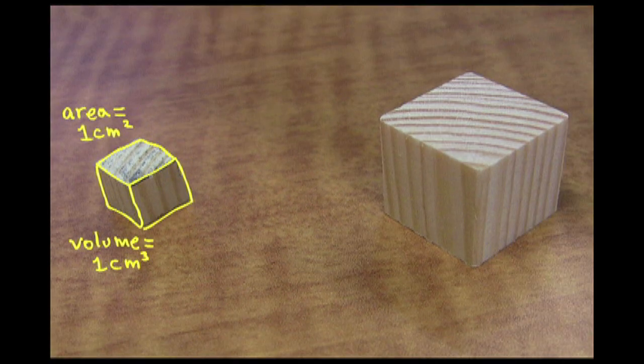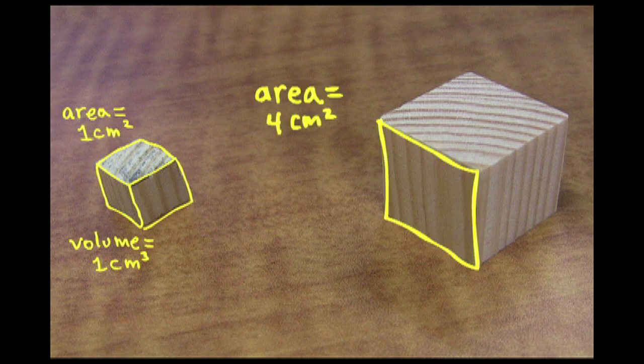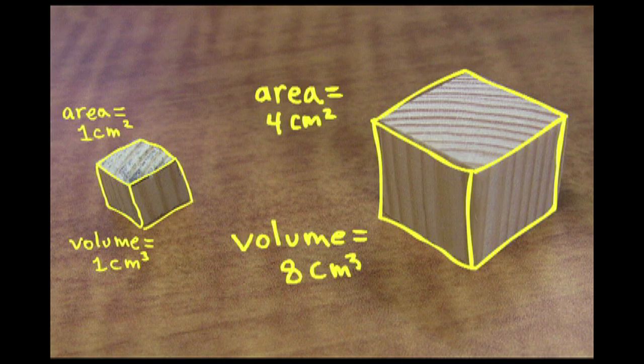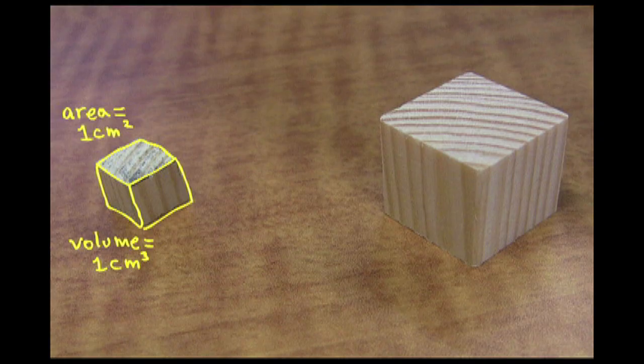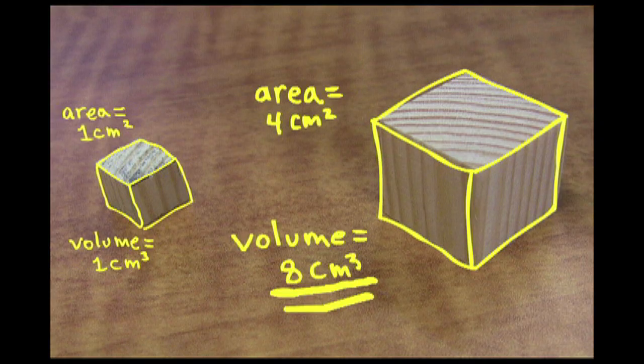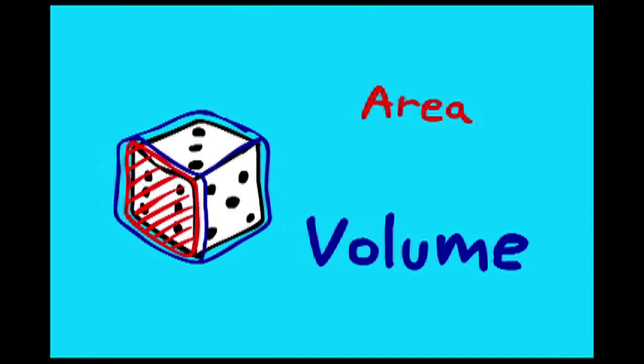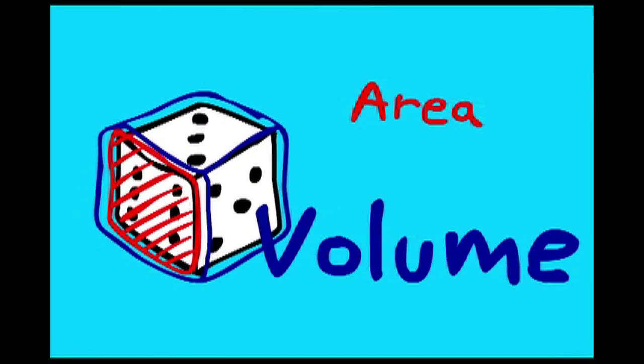Now this cube has sides that are twice as long. The area of its face is four square centimeters, but the volume is now eight cubic centimeters. Doubling the length of the sides quadruples the area, but octuples the volume. As the object gets bigger, the ratio between its area and volume changes.